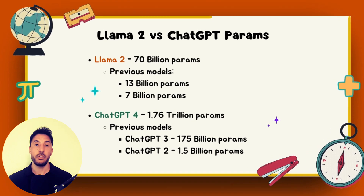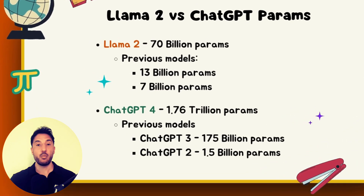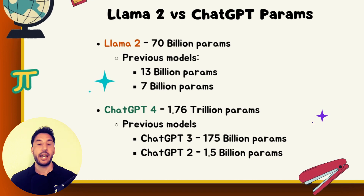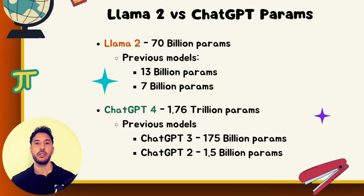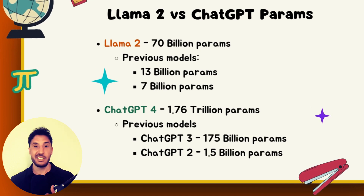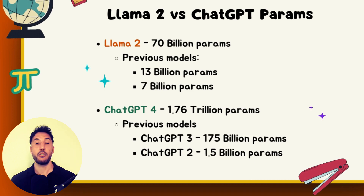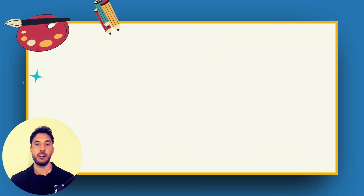With LLaMA 2, you can actually download the model onto your local machine and interact with it without needing a web browser — you run the file directly on your own computer. In comparison, ChatGPT-4, the most popular large language model, has 1.76 trillion parameters, making it far more powerful than LLaMA 2. ChatGPT-3 had 170 billion parameters and ChatGPT-2 had 1.5 billion — showing roughly a 10x increase from GPT-2 to GPT-3, and another 10x from GPT-3 to GPT-4.